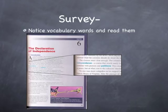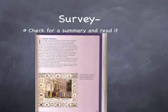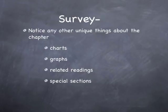Notice vocabulary words and read them — they are often set off in boldface or colored font. For any vocabulary words that do not appear with definitions, look at the glossary, which most textbooks provide at the end of the book just before the index. Most of the time these vocabulary words are new to the reader or clarify which of the many definitions are being used in the text. Check for a summary and read it — this is the chapter in a nutshell, as the summary concisely contains all of the important information. Finally, notice any other unique things about the chapter, such as charts, graphs, related readings, or special sections. If it is set off from the text, it is there to supplement additional information and bears attention.